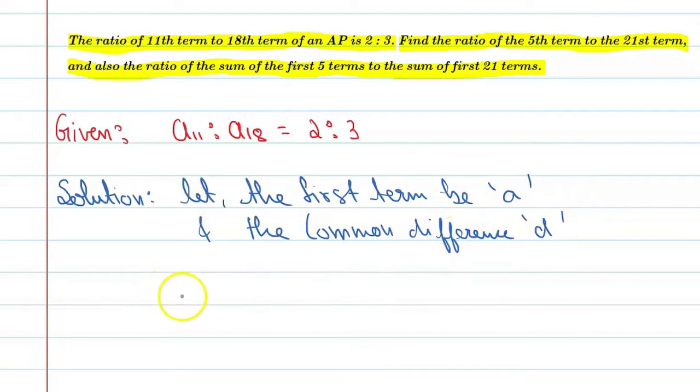Now we know that the Nth term of the AP is equal to A_n equal to A plus N minus 1 into d. So similarly, if we talk about A11 and A18,